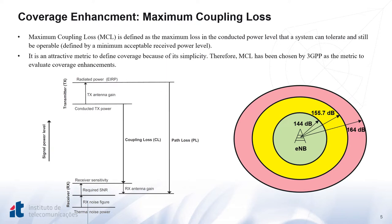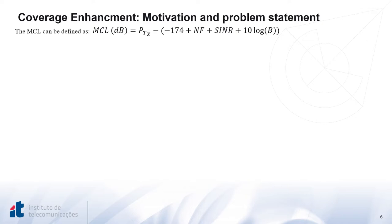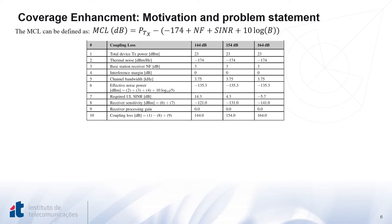The NB-IoT standard has defined three different coverage classes using the maximum coupling loss: 144 dB for users in good coverage conditions, 155.7 dB for users in intermediate coverage conditions, and 164 dB for users in challenging coverage conditions. The link budget for the three defined maximum coupling losses has been calculated using the maximum coupling loss formula. We can notice that the 164 dB case, corresponding to users in bad coverage conditions, has the lowest SNR value at the receiver side.